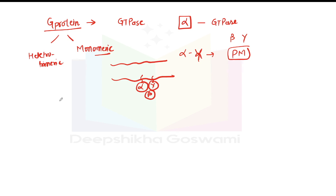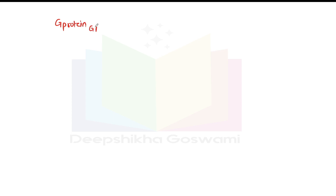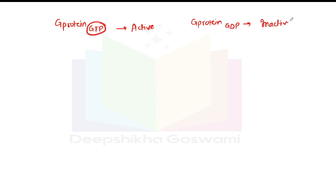Now let's talk about G protein activity. When G protein is connected with GTP, we call it the active state. When G protein is connected with GDP, it is in the inactive state. The switch between active and inactive states involves two proteins: GAP and GEF.